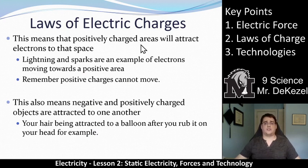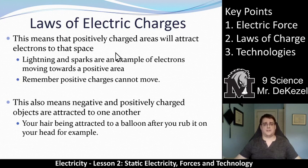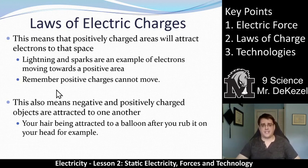Positively charged areas will attract electrons to that space. So if we have a whole bunch of electrons in a cloud above and a tree that's a little bit positively charged, lightning might come down from those clouds toward the positive area — lightning and sparks are examples of moving electric charges. When you take your sweater off and get shocked, electrons are moving toward a positive area. It's really important that positive charges cannot move — it's only negative charges that can move.